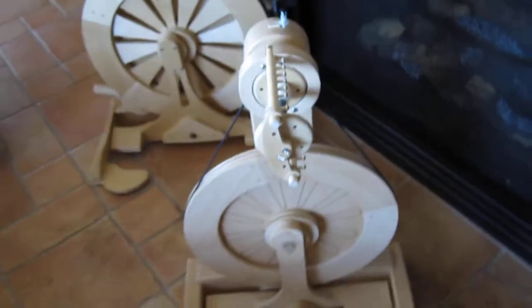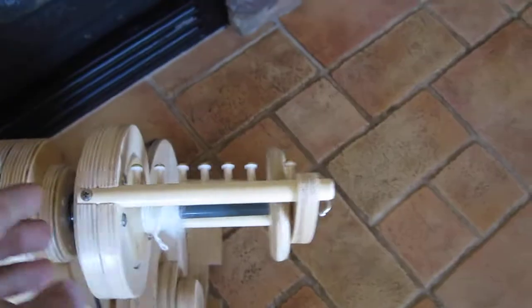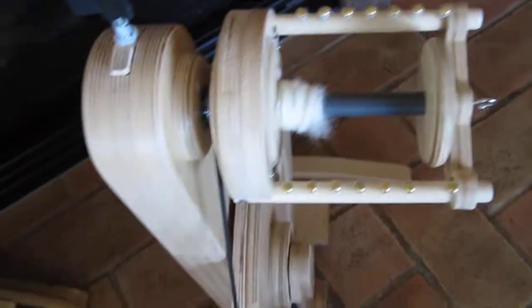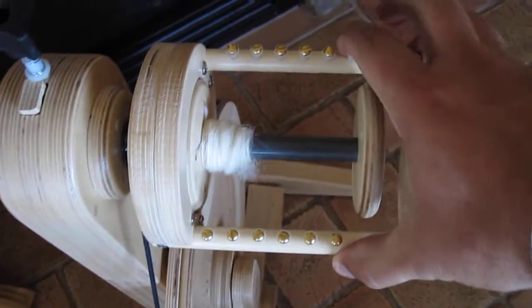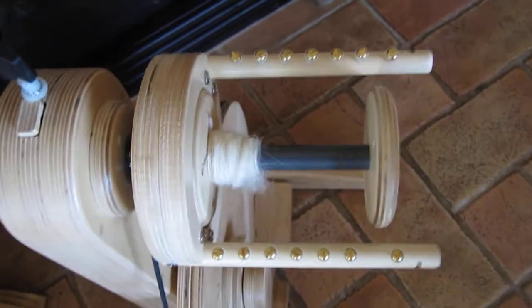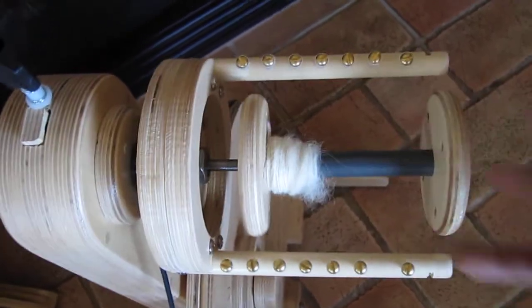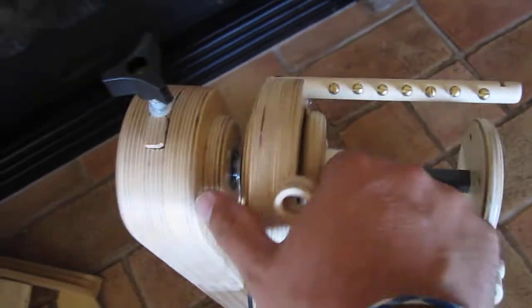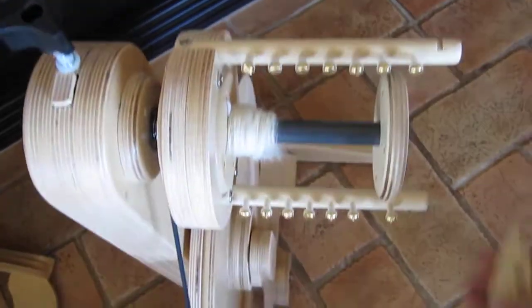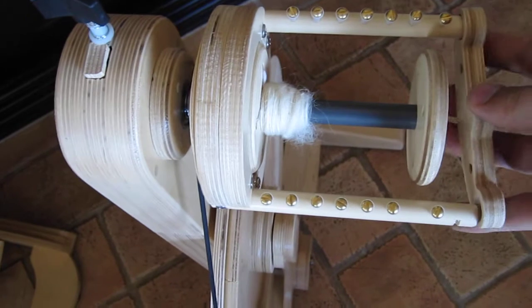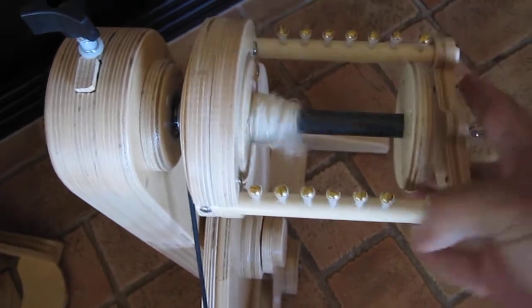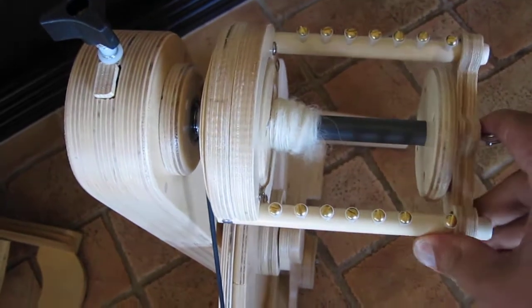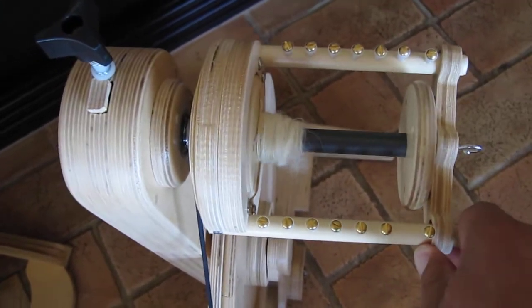The bobbin is easily removed. Simply squeezing the flyer arms, removing and pulling, the bobbin is released. Simply reverse the process and you're ready to spin. Much easier with two hands.